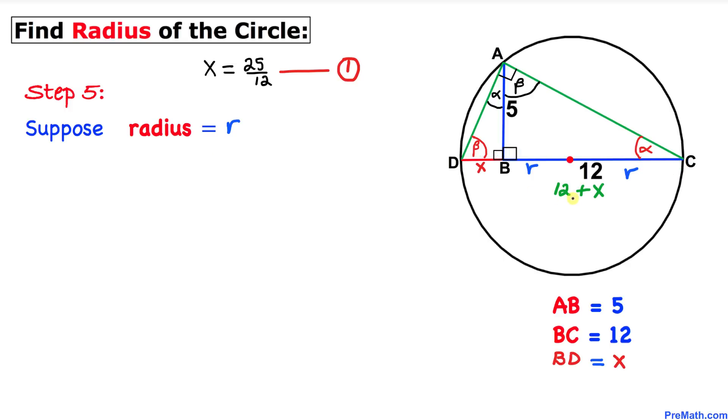Therefore I can write this diameter 12 plus X equals the twice the radius, r plus r, which is 2r. Now let's isolate X. Bring 12 to the other side, so X is going to be 2r minus 12. Let me call this equation number 2.